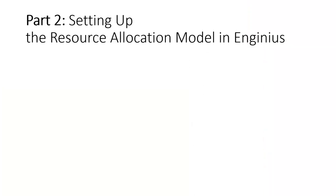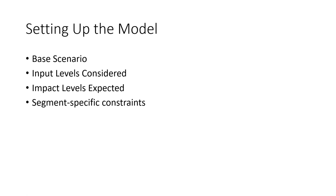With the basic background of the case introduced, let's set up the resource allocation model within InGenius. We'll need to set up a base scenario, consider which different levels of inputs — the number of salespeople — we're considering at each of the 14 sales branches, the corresponding impact levels expected, and whether there are any segment-level or global-level constraints we need to set for the model.